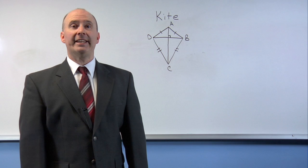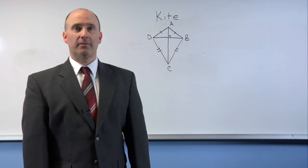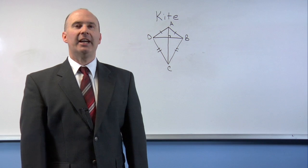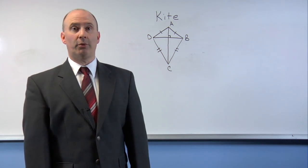We're going to find out whether both of the diagonals of a kite bisect angles. By definition, a kite is a quadrilateral where two pairs of adjacent sides are congruent.